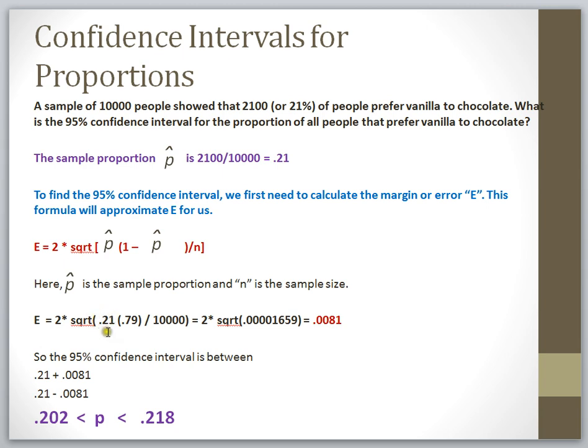Our sample proportion is 0.21. 1 minus that value is 0.79. Our value of n or our sample size is 10,000. So to do this problem, I multiply 0.21 times 0.79 first, then I divide by 10,000. That gives me this value. Then I take the square root of that entire value and then multiply it by 2. That ends up giving me 0.0081. That's my margin of error and that's what I'm going to add and also subtract to my sample proportion to get my 95% confidence interval around the population proportion.